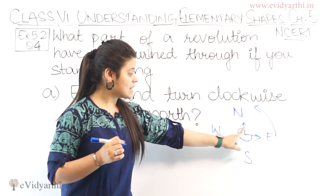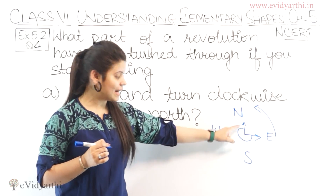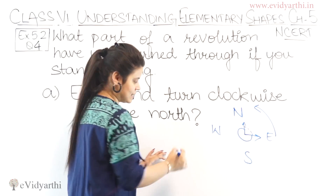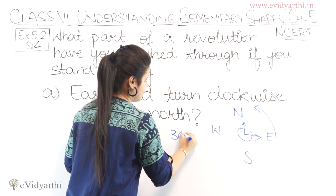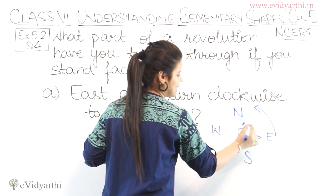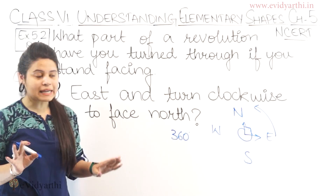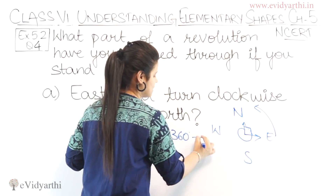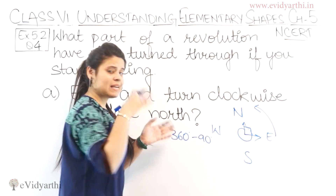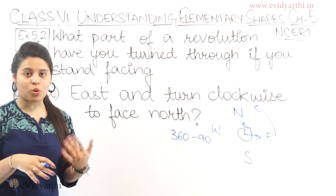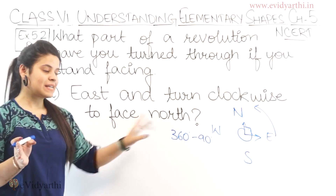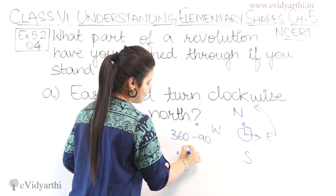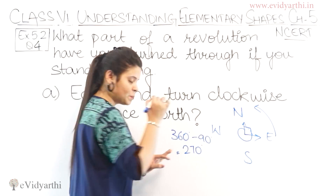So this means this is a small angle and this is a big angle. To complete the whole revolution it is 360 degrees. This inner angle is 90 degrees — we don't count that because we see a reflex angle here. So 360 minus 90: this is the angle going clockwise to face north. So 360 degrees minus 90 gives us 270 degrees.